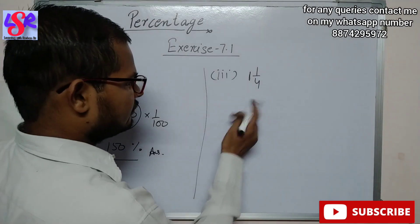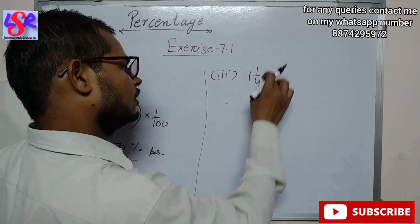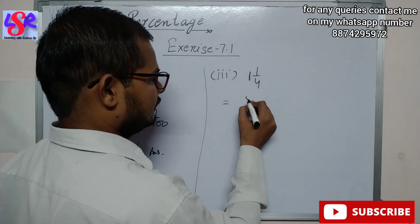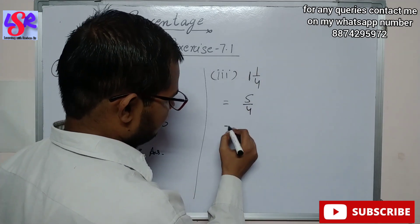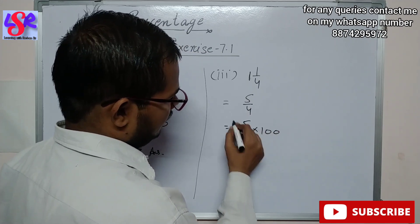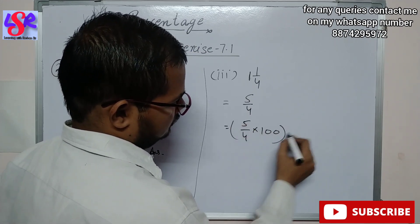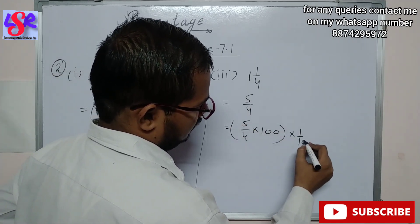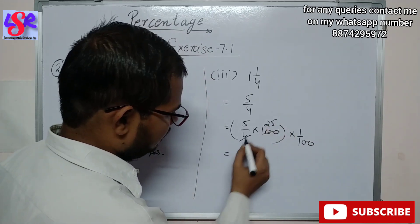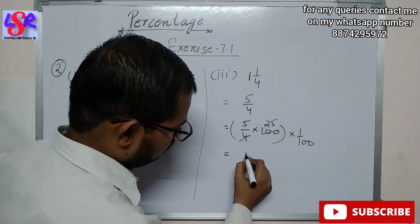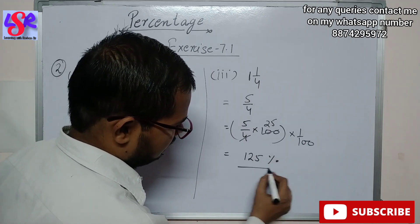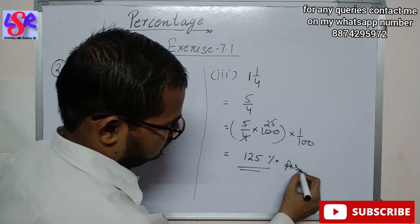Let's see one more part. Here we have 1 whole 1/4. Converting to improper form: 4 into 1 is 4, plus 1 is 5, giving 5/4. This can be written as 5/4 into 100 into 1 upon 100. Now 4 cancels with 100 to get 25, and 5 into 25 is 125, so the answer is 125%.